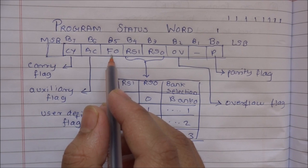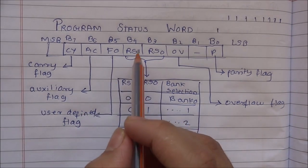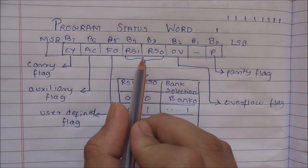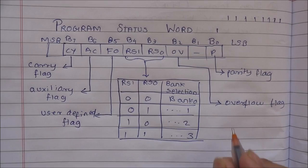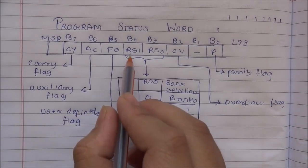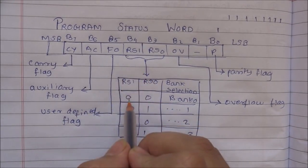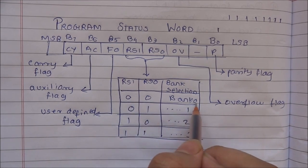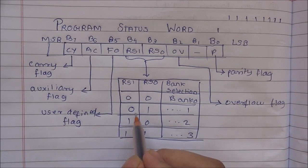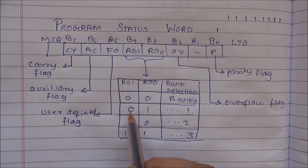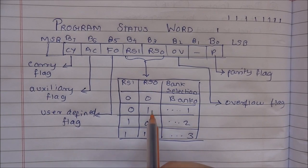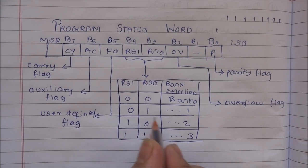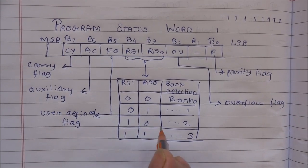RS1 and RS0 are the register bank select bits. When RS1 is 0 and RS0 is 0, bank zero will be selected. When RS1 is 0 and RS0 is 1, bank one will be selected. Similarly, other combinations select the remaining banks.